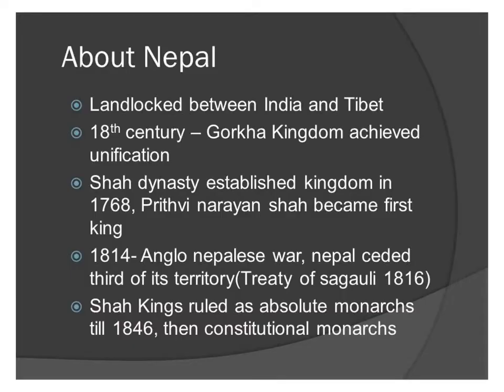Nepal is a landlocked country. It borders India and Tibet, which is in China. In the 18th century, the Gorkha kingdom achieved its unification. The Shah dynasty established the kingdom in 1768, and Prithvi Narayan Shah became its first king.